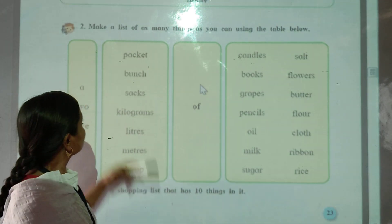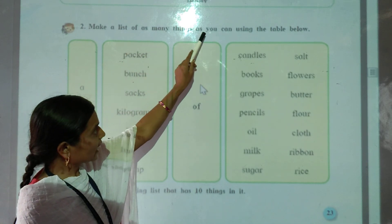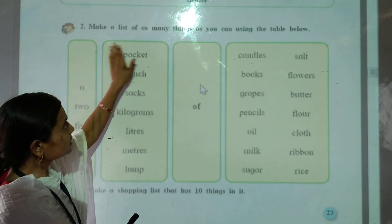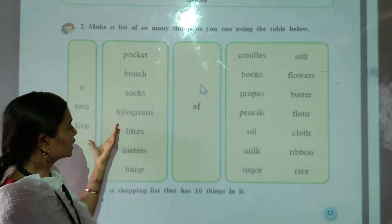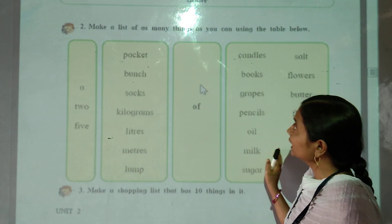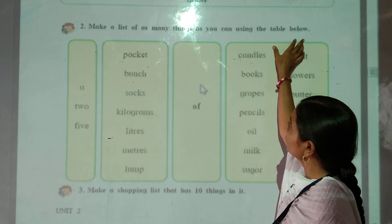So let's start. Second, make a list of as many things as you can using the table below.